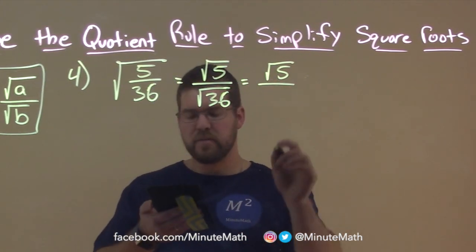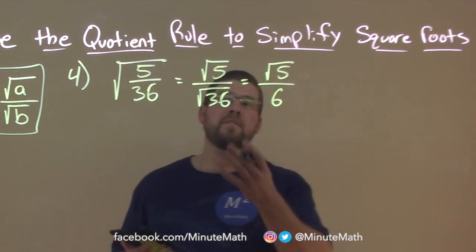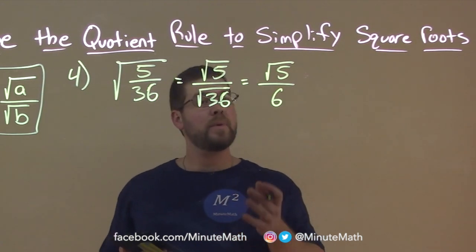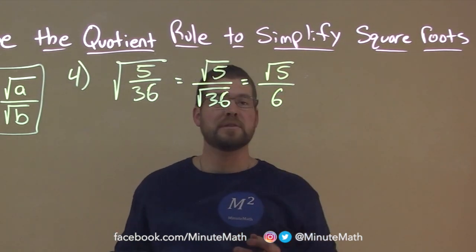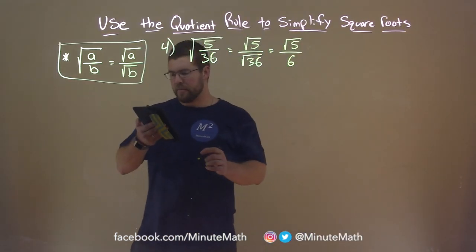And there we have our answer. We simplified this square root of 5 over 36 to be equal to square root of 5 over 6. There's nothing else that we can do to break this down. So let's try another example here.